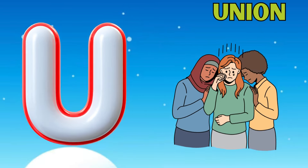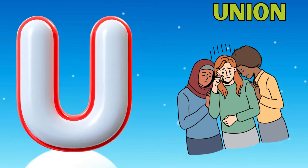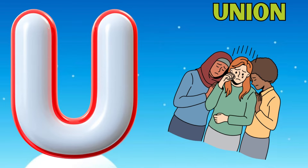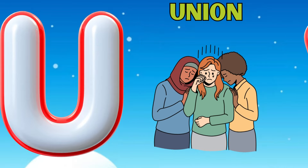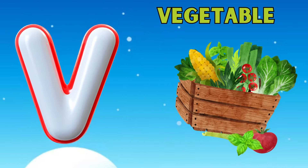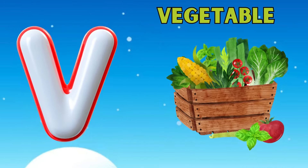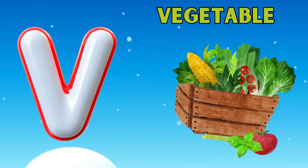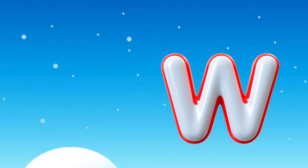U is for union, a, a, union. V is for vegetable, v, v, vegetable.